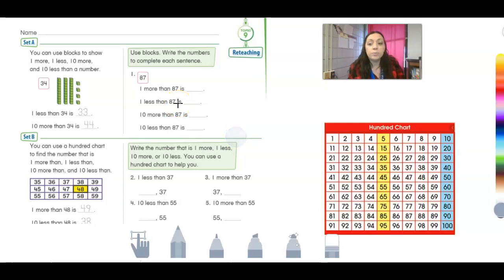It says you can use blocks to show one more, one less, ten more, or ten less than any number. So look right here, it says 34. So when we look at the number 34, remember it's 30 and 4. So 30 stands for three tens. It's got a three in the tens column and then it's got four ones. So I could see that this is 34. One less than 34 I could do is just take one of them off and then I would be left with 33.